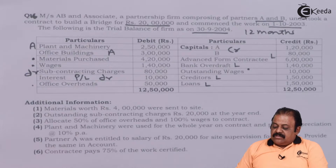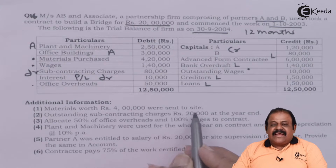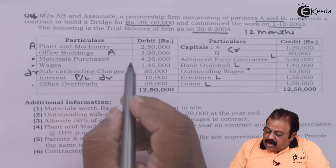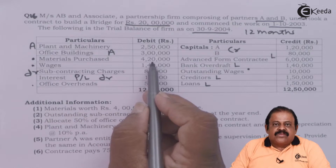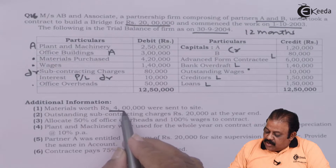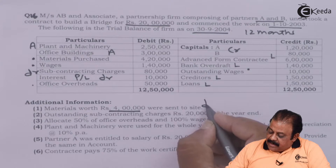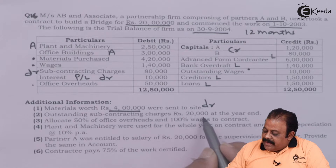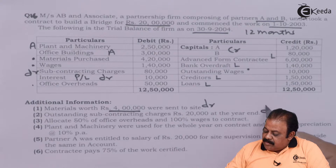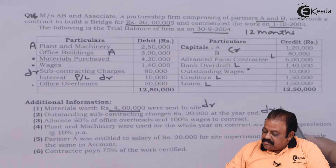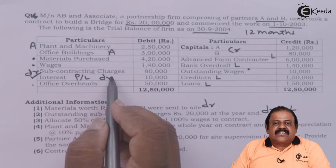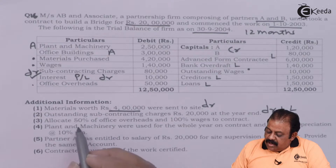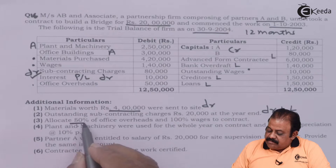Additional information: material worth 4 lakhs were sent to the site. From the trial balance, material purchased is 4,20,000, so 4 lakhs will be debited to the contract account. Outstanding subcontracting charges of 20,000 at year end will be debited to the contract account — it will be added to the subcontracting charges — and the second effect will be on the liability side of the balance sheet.